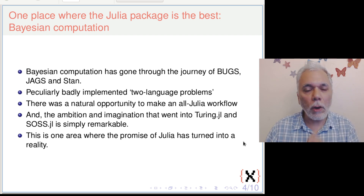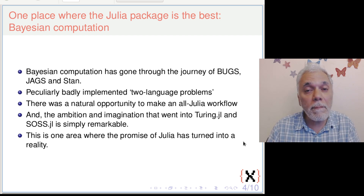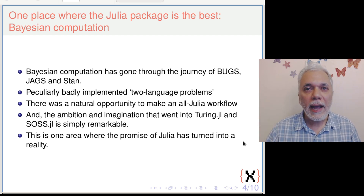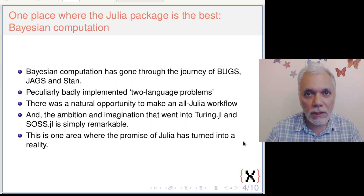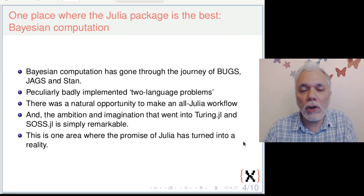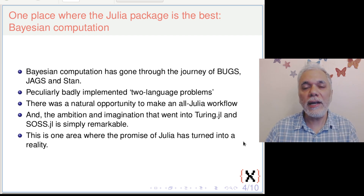There was a natural opportunity to make an all-Julia workflow, because Julia has the modern computer science through which a Bayesian model can be written in pure Julia. I really admire the people who have built Turing and Sor — they played this at a higher level and a bigger scale. I feel it's not an exaggeration to say that the best Bayesian statistics today in the whole world is done in Julia using Turing and Sor. These remarkable packages rethought the problem afresh using Julia's modern computer science opportunities.